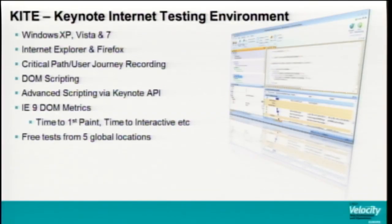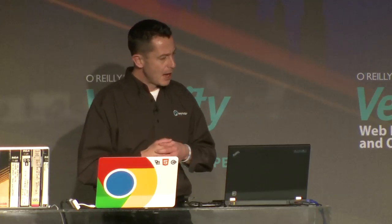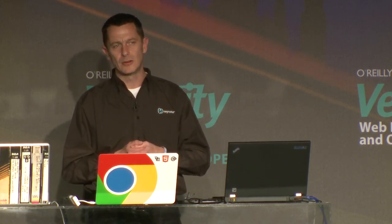So I'll start with KITE. This is the desktop web version of the tool. It's a Windows tool, so you'll have to fire up your VM to get it running on a Mac. The reason it's Windows only is it's tied heavily into IE. It currently supports IE 9 and Firefox, and you can change compatibility mode in IE 9 to regress back to 7 and 8. You can record user journeys and do clever things with DOM scripting to interact with complex elements on the page.